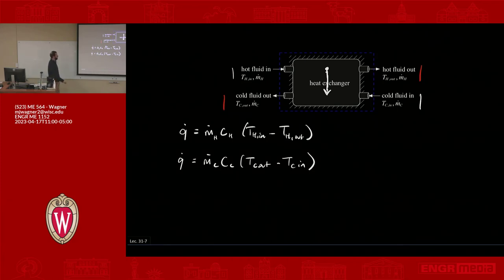We have some stuff that we know. Usually we're going to know the hot inlet and the cold inlet. But then we don't necessarily know what's the cold outlet, what's the hot outlet, and what is this Q. So we have two equations and we have basically three unknowns.